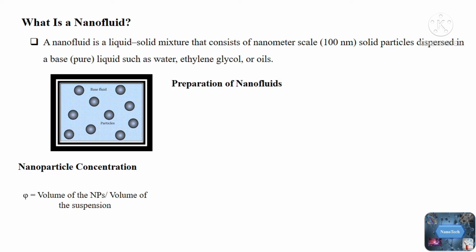There are primarily two types of methods for preparing nanofluids: one-step methods and two-step methods. The one-step method involves vaporizing a solid material under vacuum and then directly condensing its vapor into the liquid. In the two-step method, dry primary nanoparticles are produced and stored as a nanopowder first. They are then dispersed in the base liquid. The main disadvantage of this method is that dry nanoparticles agglomerate in the powder and are difficult to break down into primary particles.